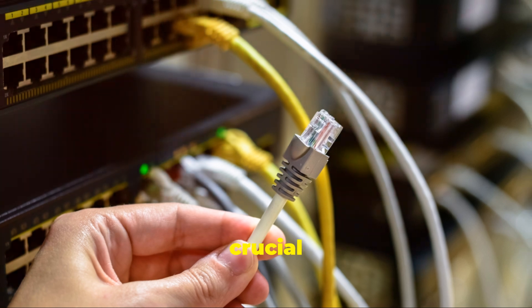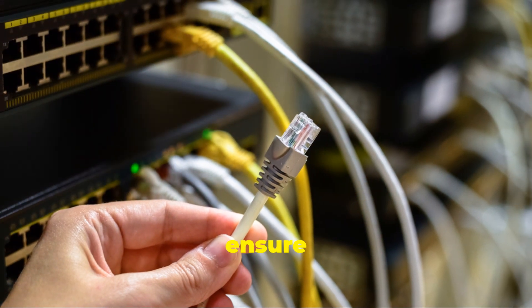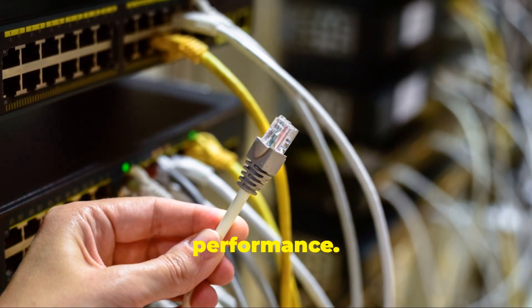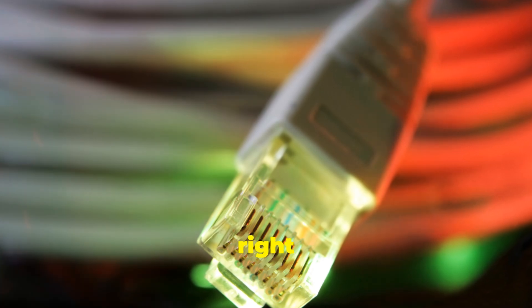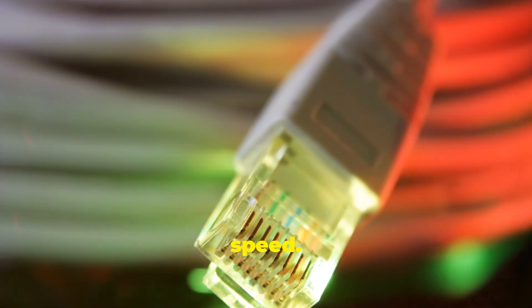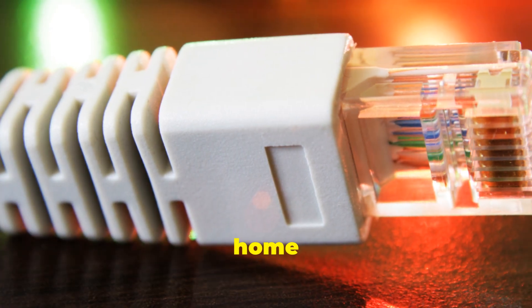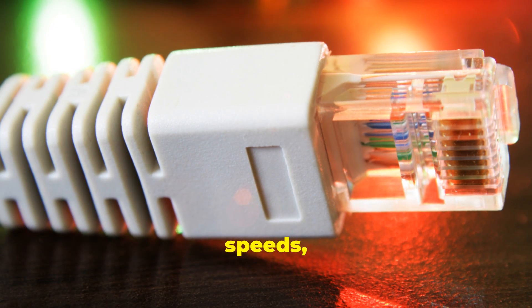Ethernet cable: choose the right category for your network speed. Cat5e is common for home use, but if you need higher speeds, consider Cat6 or Cat6a. The category you choose will affect your network's performance.